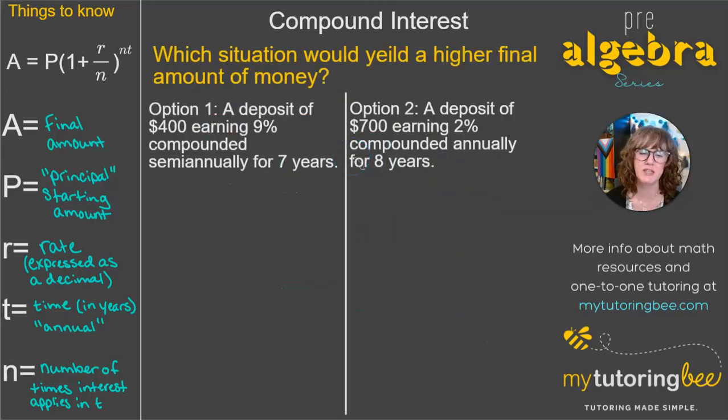Okay, here we have a question that says, which situation would yield a higher final amount of money? So we've got two different options here. Option one is a deposit of $400, earning 9% compounded semi-annually for seven years. Option two is a deposit of $700, earning 2% compounded annually for eight years.